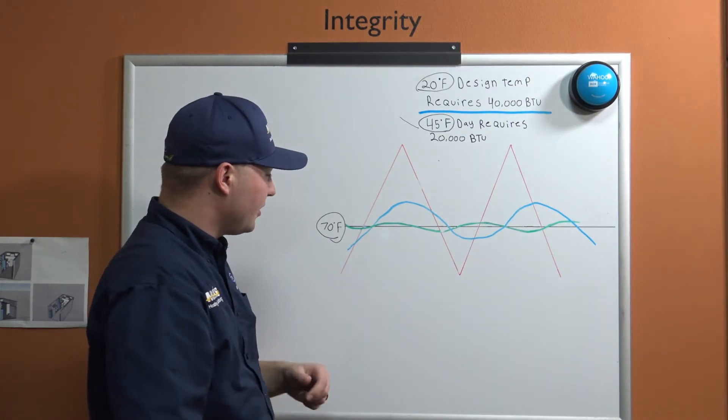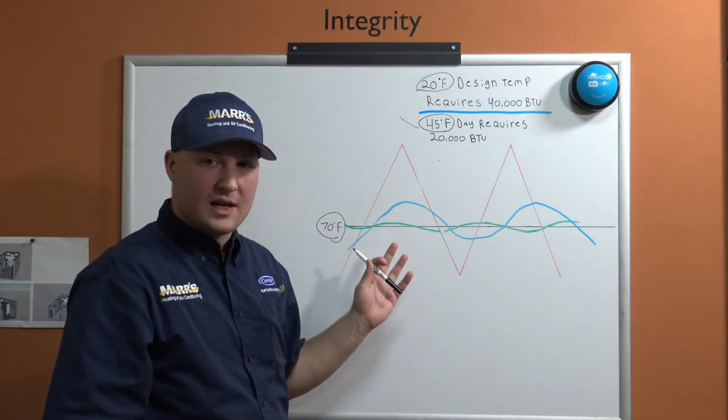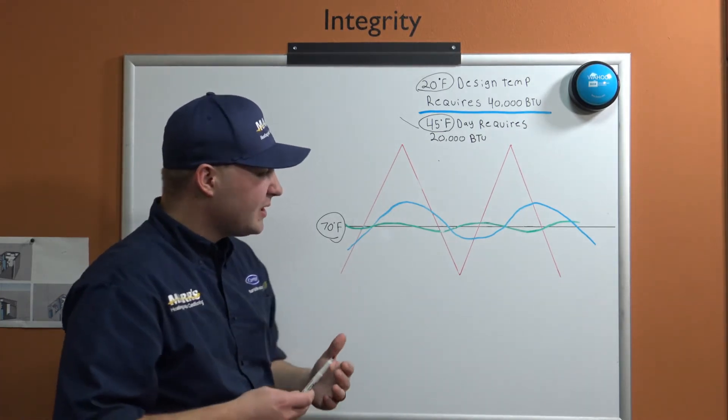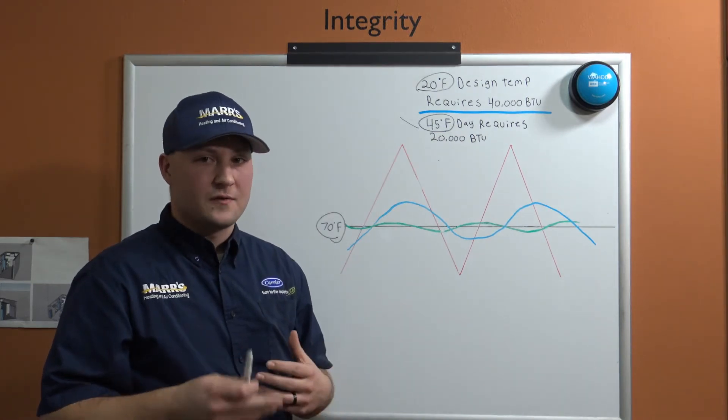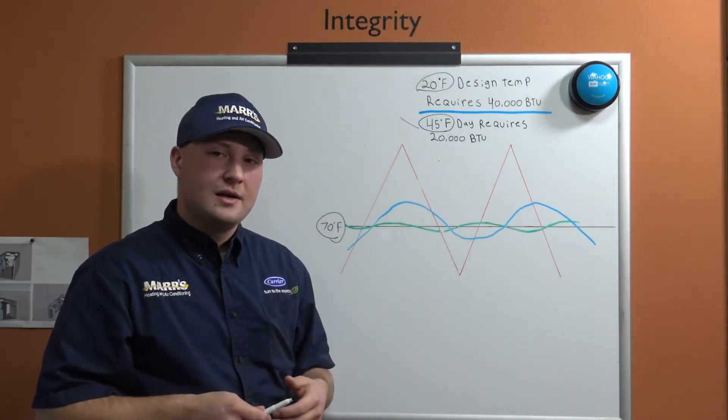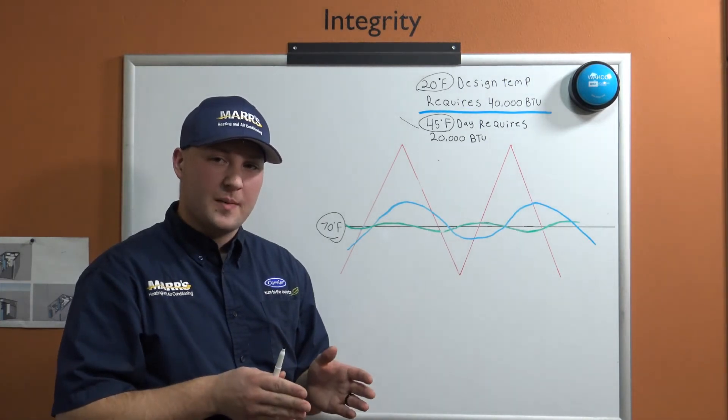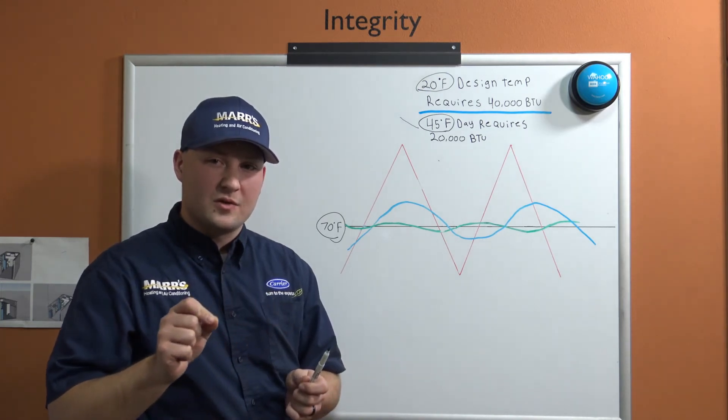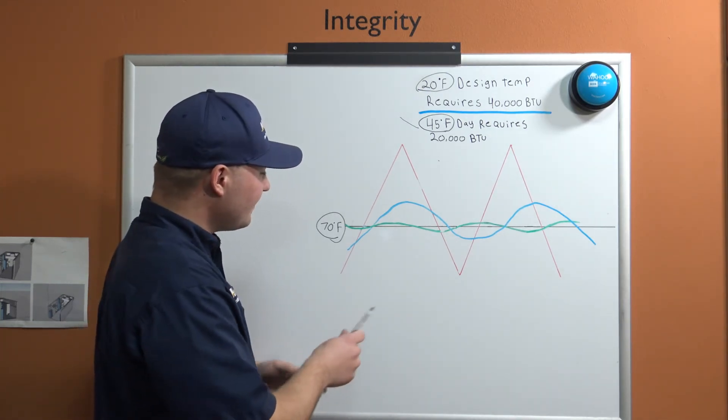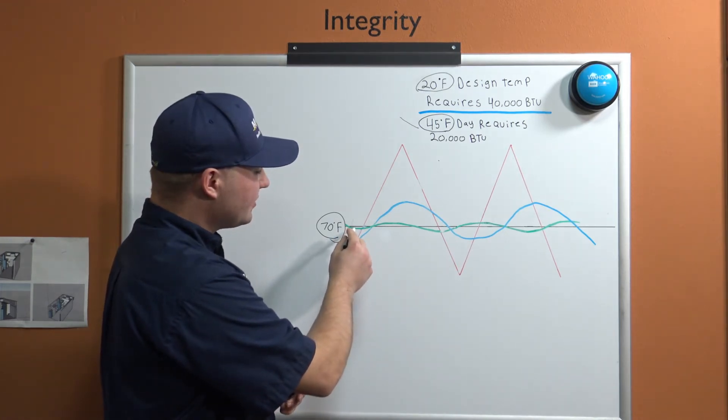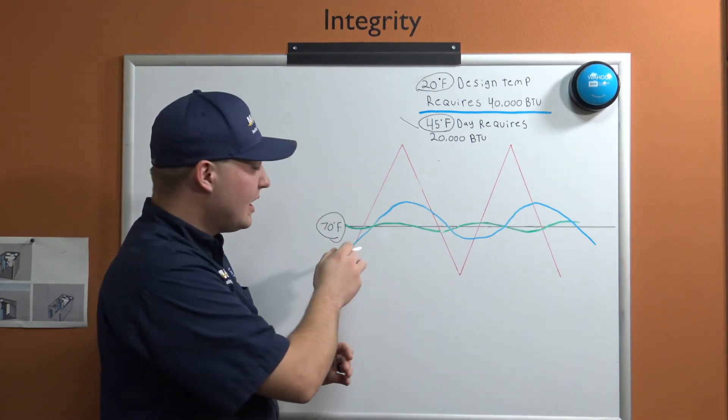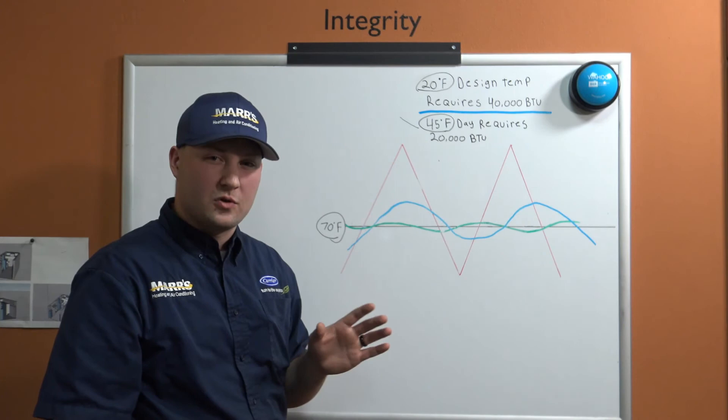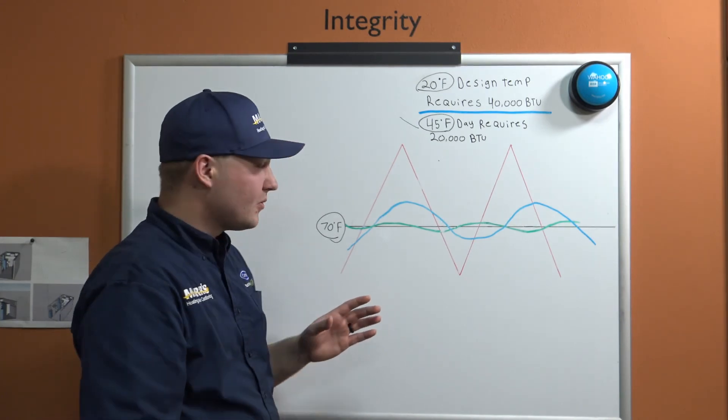With that, we'll go to our green line here, which is indicating our variable speed or variable capacity equipment. Variable speed equipment typically—and again, this differs based on equipment type, brand, etc.—typically you're going to have anywhere between 40% capacity and 100% capacity in tiny increments in between those numbers. What this is doing is our thermostat is communicating with our equipment, and we're able to ride really close to this 70 degree line, maybe even within half a degree on either side.